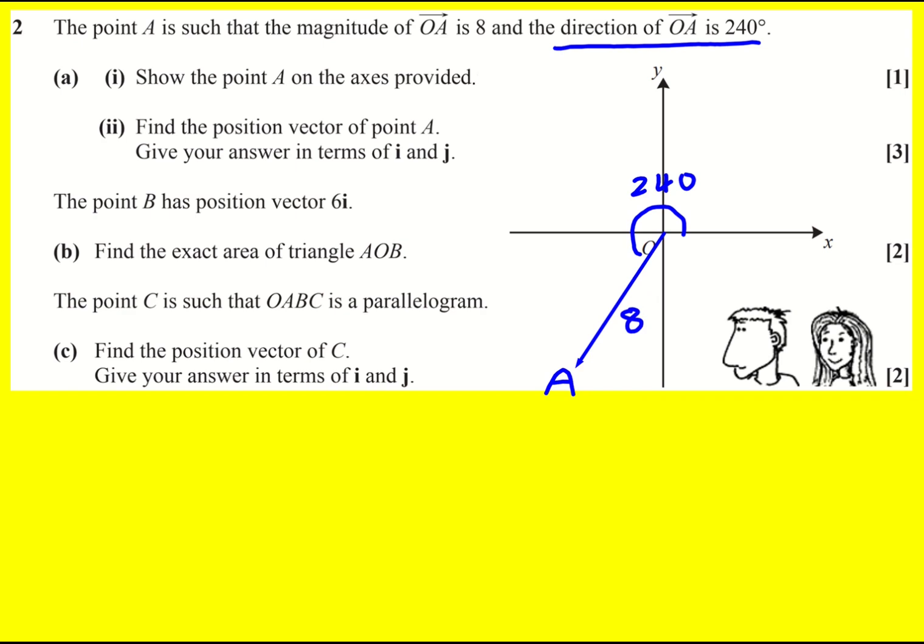Part two asks to find the position vector of point A in terms of i and j. We're still finding OA, that's our position vector, but we need to write it in terms of i and j.